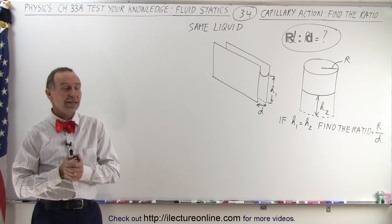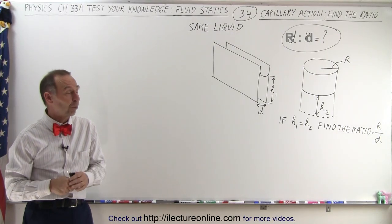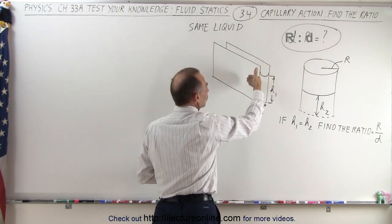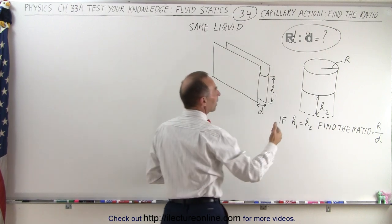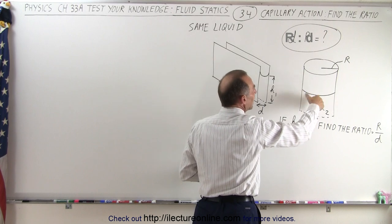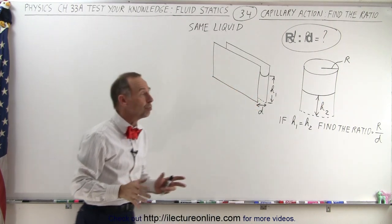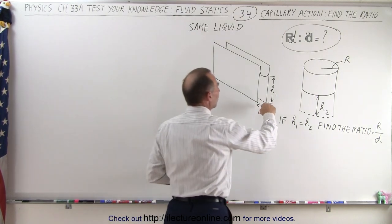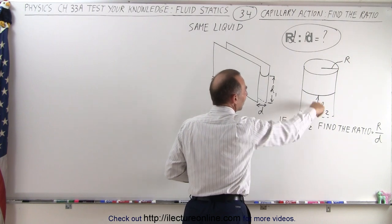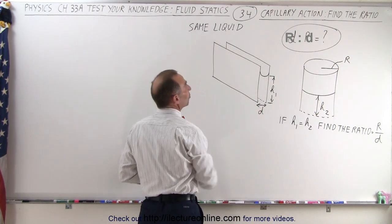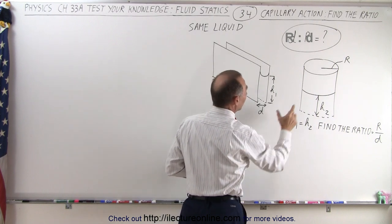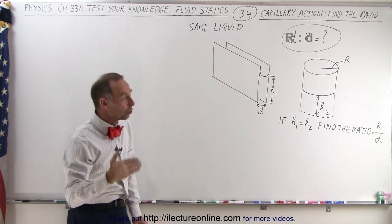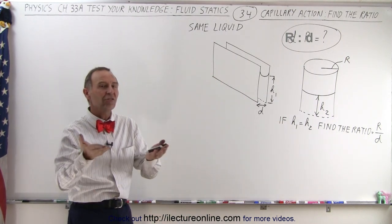Welcome to our lecture online. Here is an interesting problem. We've already calculated the height of capillary action between two glass plates and inside a tube. Now the question is: if the height between the glass plates equals the height inside the tube, the liquid is the same, the radius of the tube equals R, and the distance between the plates equals D, find the ratio of R to D.